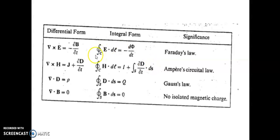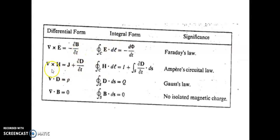These equations are valid for both the time-varying and static cases. In the static case, B is constant in time, so del cross E equals 0, and the closed integral of E dot dL equals 0, showing the conservative nature of the electrostatic field. For the static case, del cross H equals J, which is the differential form of Ampere's circuital theorem, and the closed integral of H dot dL equals I, which is Ampere's circuital theorem in the static case.